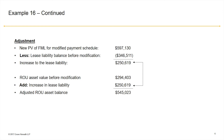To begin, we have our new present value of future minimum lease payments for the modified payment schedule — for the modified terms of an additional eight years and the incremental borrowing rate of 7%. From this we have to subtract the lease liability balance before the modification. This gives us the increase to the lease liability of $250,619. Then we calculate the right-of-use asset adjusted balance by taking the right-of-use asset balance before the modification and increasing it by the same increase in the lease liability of $250,619. This gives us an adjusted right-of-use asset balance of $545,023.